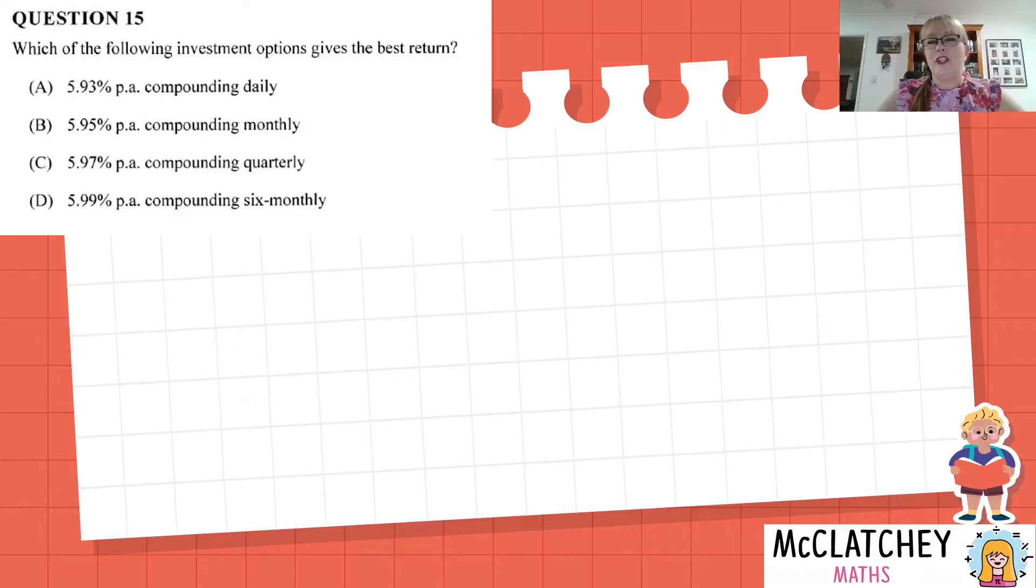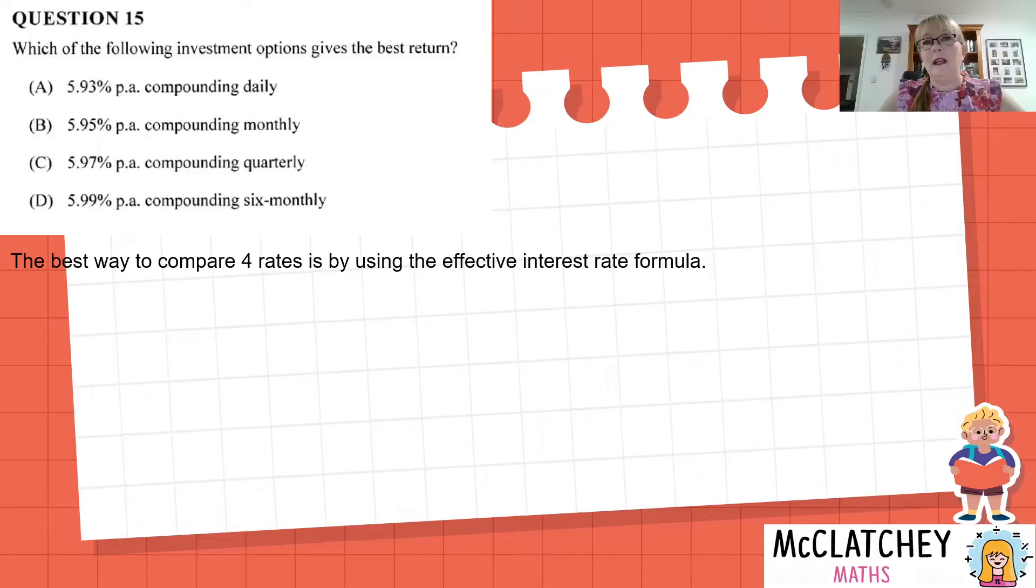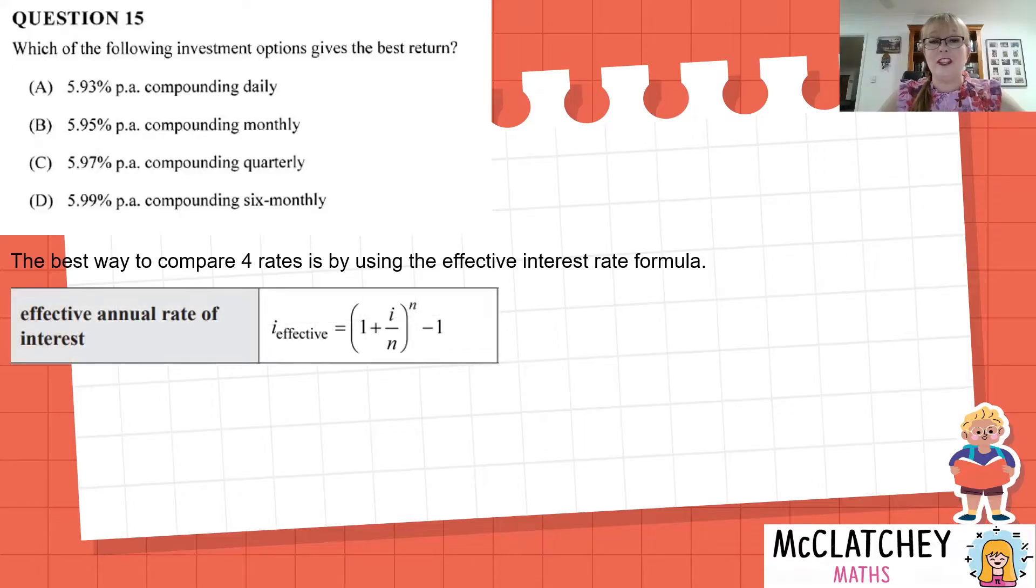So here's our question, question 15. It's multiple choice. Which of the following investment options gives us the best return? We can see there's four different percentages. They're only slightly different by about two hundredths of a percent and they all have different compounding periods: daily, monthly, quarterly, six monthly. You'll notice that there's no principle that's been invested and no length of time that it's being invested. We're just simply comparing four rates and the best way for us to do that is to use our effective interest rate formula, which is provided to us on our formula sheet.